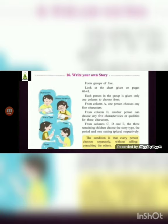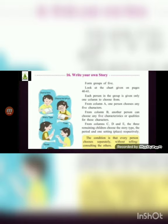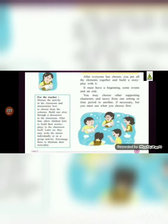Now, this is a group activity, but since we are not in a physical classroom and we are in an online study process, it is not possible to do this as a group. So let's do this activity individually. I want each one of you to take five characters from column A and from column B choose any five characteristics or qualities. From columns C, D, and E, you will individually select one element each.